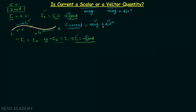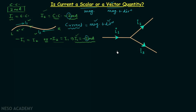However, just having magnitude and direction does not make a quantity a vector quantity — it must also satisfy all the vector laws. Therefore we can say that current can be a vector only if it satisfies all the laws of vectors. To understand this, I have taken one arrangement.